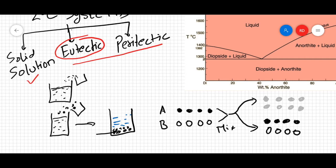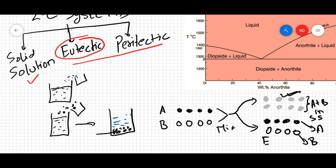A different kind of result is possible where A and B do not form a solid solution and still exist as separate A and B grains only. So even if you mix them, melt them, and recrystallize them, they will not mix with one another. In the solid solution case you cannot differentiate between A and B, but in the eutectic case you can — this type of behavior results in a eutectic system when talking about igneous systems.